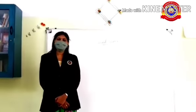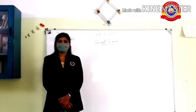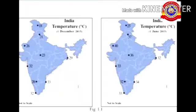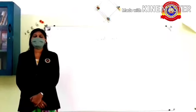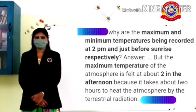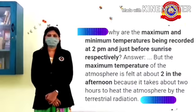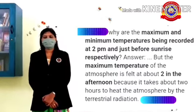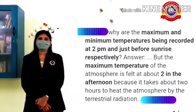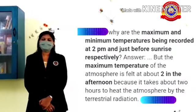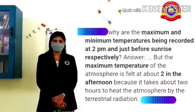Some days we feel very hot and some days we don't feel that much hot — this is because of variation in temperature. Let's see a map showing the atmospheric temperature of a few cities. Is the temperature the same at different places on the same day? No, because different places have different temperatures. Weather forecasters measure maximum temperature at 2 PM, because the maximum temperature of the atmosphere is felt at 2 PM in the afternoon.